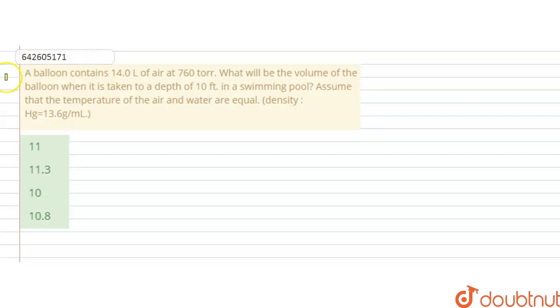Hello students, the question is: a balloon contains 14 litres of air at 760 torr. What will be the volume of the balloon when it is taken to a depth of 10 feet in a swimming pool?